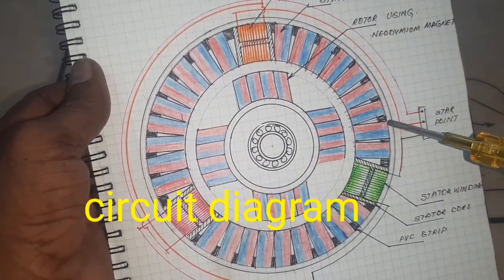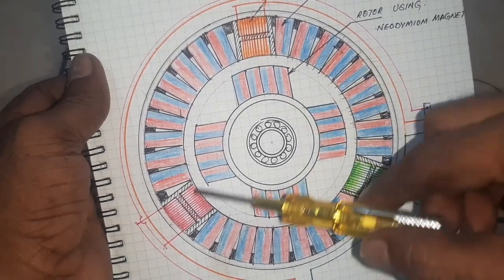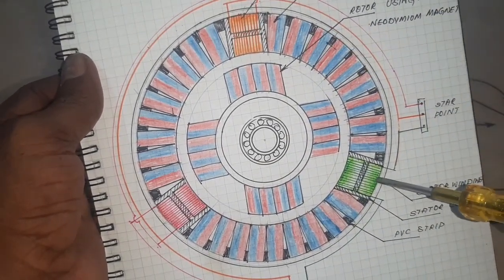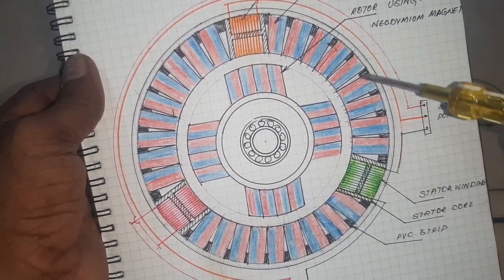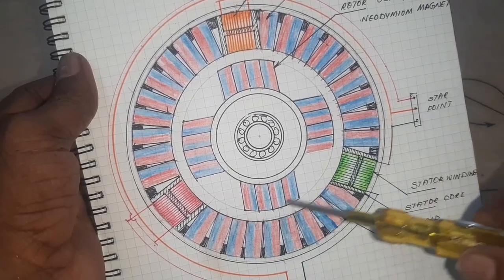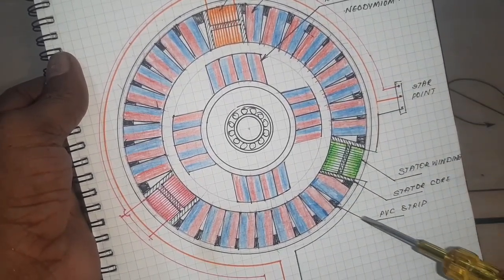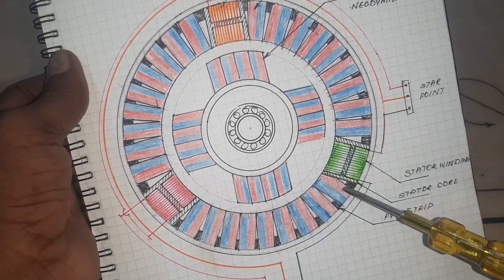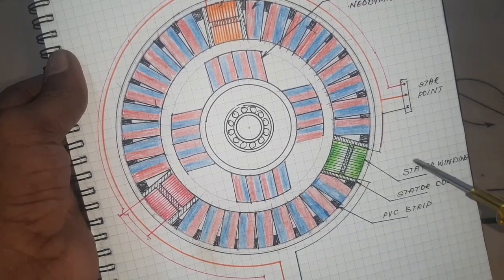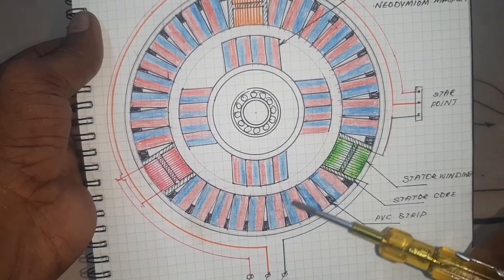Here this is the stator and this is the rotor. Here 3 electromagnets are provided at 120 degrees. Between the 2 electromagnets, 9 ferrite magnets are attached in the toroidal shape. Here this is the PVC strip used for making the circular shape. Here this is the start point. This is the motor leads.